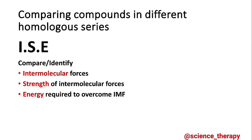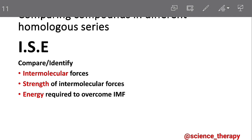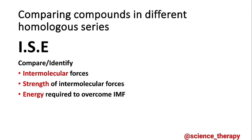Now let's look at comparing compounds in different homologous series. For this, we will use ISE — I: identify the intermolecular forces; S: the strength of intermolecular forces; and E: the energy required to overcome the intermolecular forces. Now let's look at an example and see how we can solve that in a question.